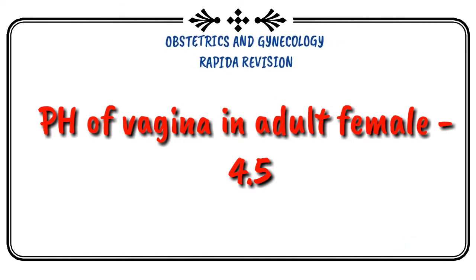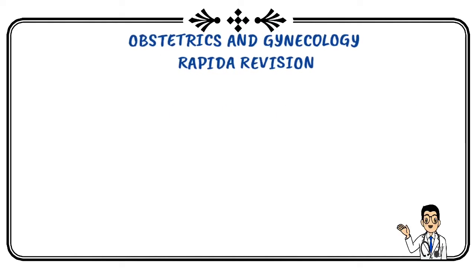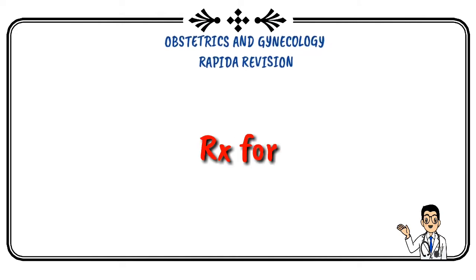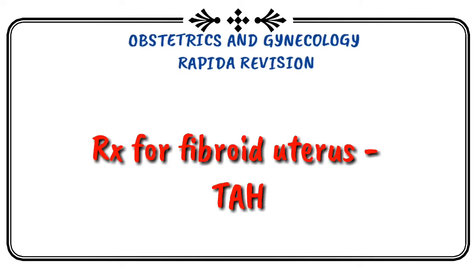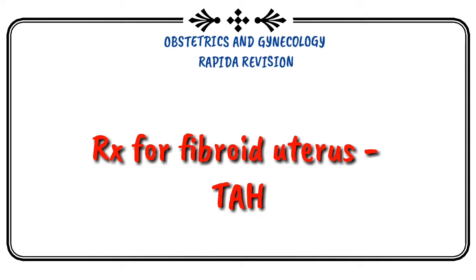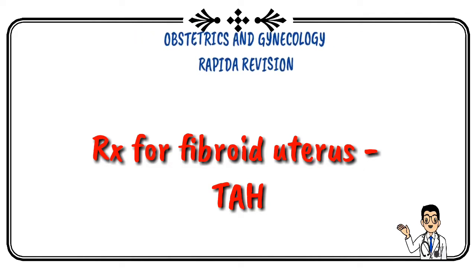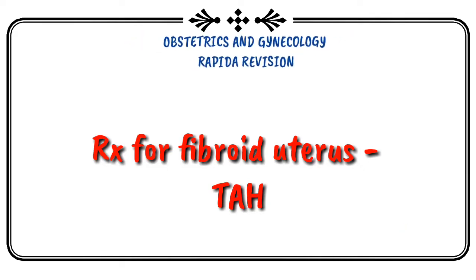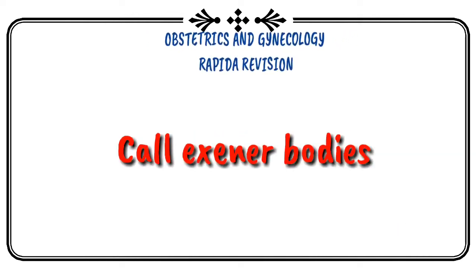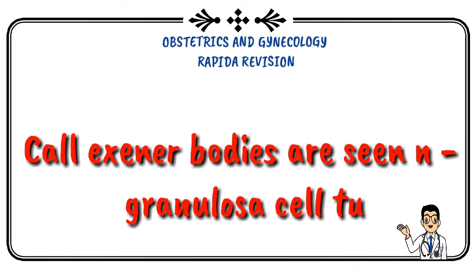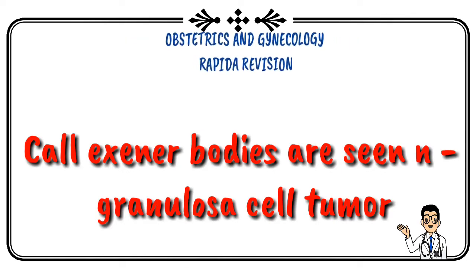Treatment for fibroid uterus is total abdominal hysterectomy. Call-Exner bodies are seen in granulosa cell tumor.